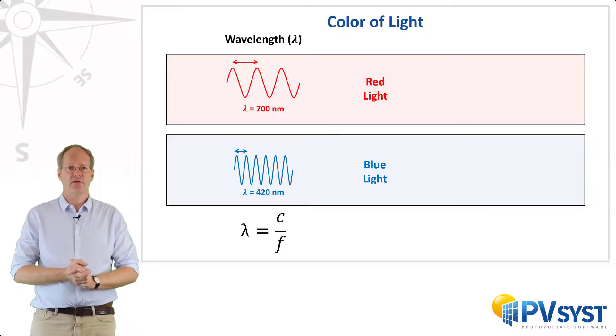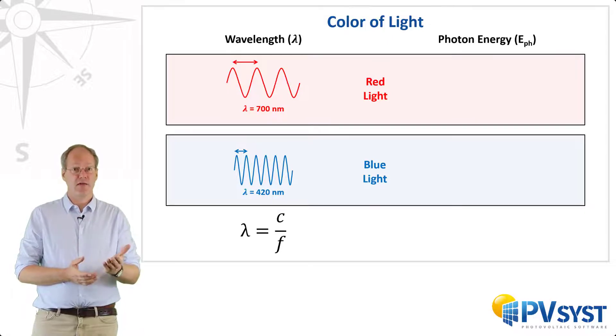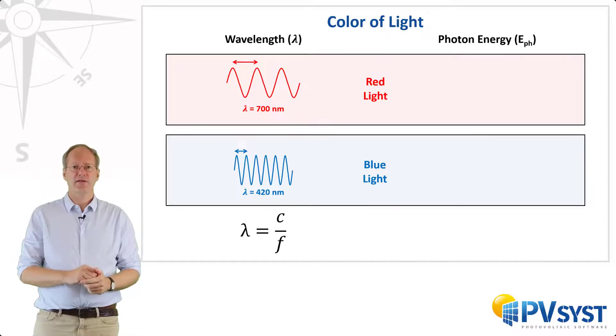How can we describe different colors of light using particle properties? In terms of particles, different colors of light have different photon energies. That is to say, the amount of energy of each individual photon. This will often be designated by EPH, as shown here. When we talk about photon energy, we usually use the unit of electron volts, or eV.